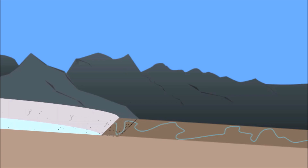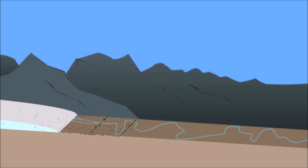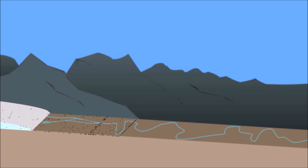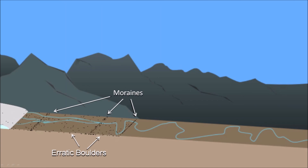A glacier stops advancing and retreating when temperature and snowfall are in dynamic equilibrium, meaning the rate of melting equals the rate of growth. Even though the ice front does not advance or retreat, the ice continues to flow and rocks accumulate at the forward boundary, forming a moraine. The front may stay stationary for hundreds or thousands of years. When the ice melts and retreats, the landscape is littered with erratic boulders and moraines. Blocks of ice may break off, become partially buried, and slowly melt, leaving behind pits called kettles — or kettle lakes when filled with water. Organic material found in moraines can be radiocarbon dated to determine the timing of glacier advances and retreats.